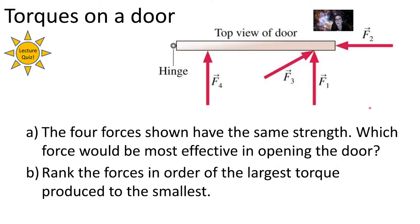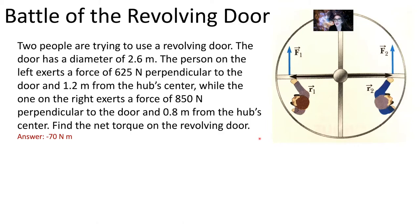With that in mind, here is the engagement check question. We have a hinge connected to a door, viewed from above. We apply four forces in different directions — all equal magnitude but applied at different distances from the pivot and at different angles. Question A: which force would be most effective in opening this door? Question B: rank the forces from largest torque produced to smallest.